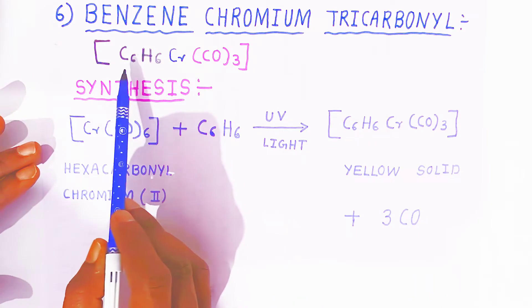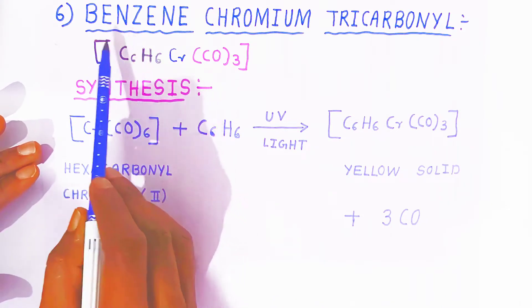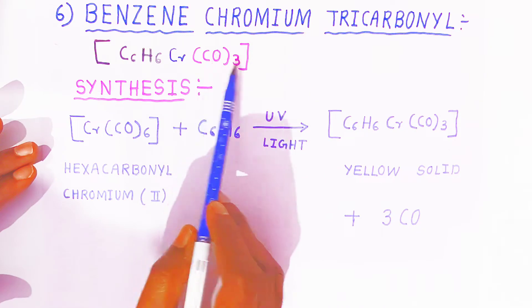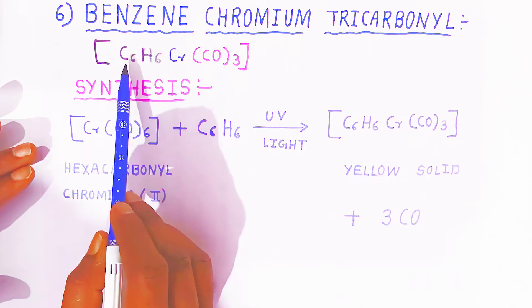This is the structure of the compound. This is the complex benzene-chromium-tricarbonyl because three carbonyl groups and chromium are there along with benzene.